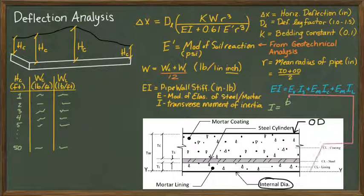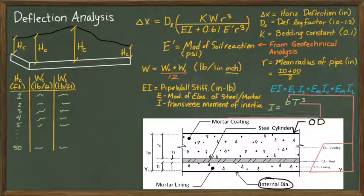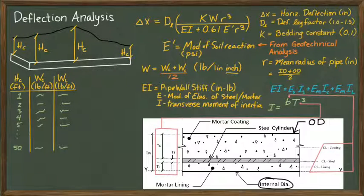The moment of inertia for a hollow cylinder is calculated as B, which is the distance from the center of the pipe to the centroid of the given material, times the cube of the thickness of the specific material section, divided by 12.